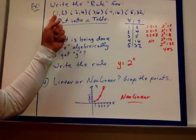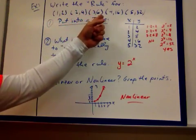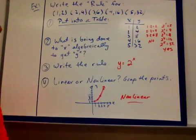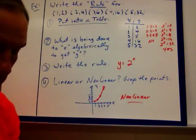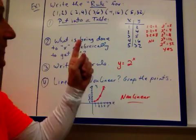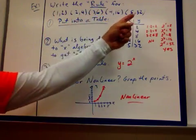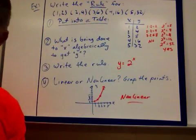So here we're looking at the points 1, 2, 2, 4, 3, 8, 4, 16, and 5, 32. We want to find the rule form. What's the equation that you can plug these values for x into the equation and get those corresponding y values?